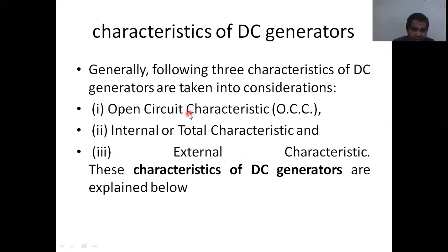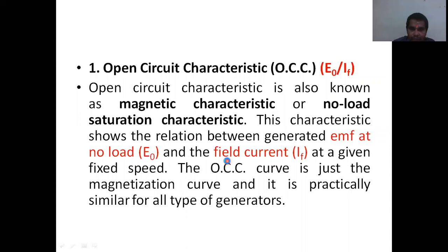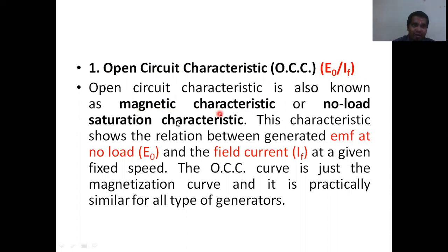So we will be seeing open circuit characteristics, internal or total characteristics, and external characteristics one by one. First, open circuit characteristics: it is drawn between the open circuit voltage and the field current. It is also called magnetizing characteristics or no-load saturation characteristics.